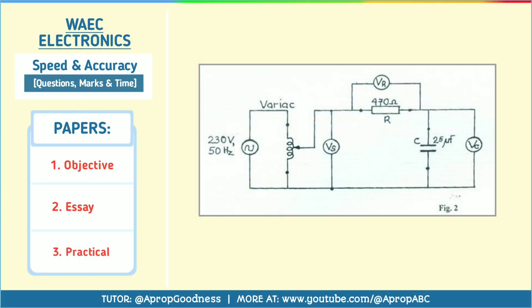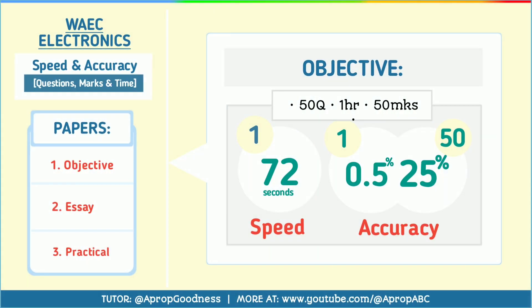For your electronics examination on speed and accuracy — on the objective theory and practical — because you have 50 questions to be answered in one hour for 50 marks, your speed should be 72 seconds per question.